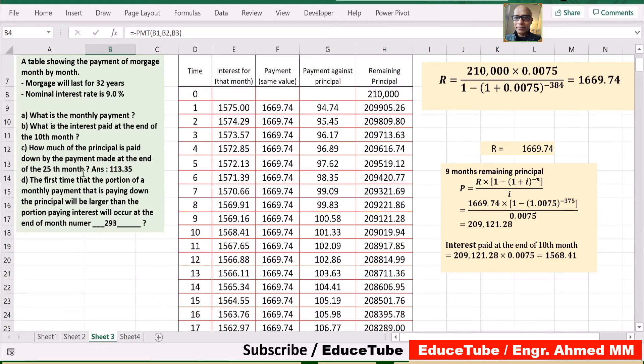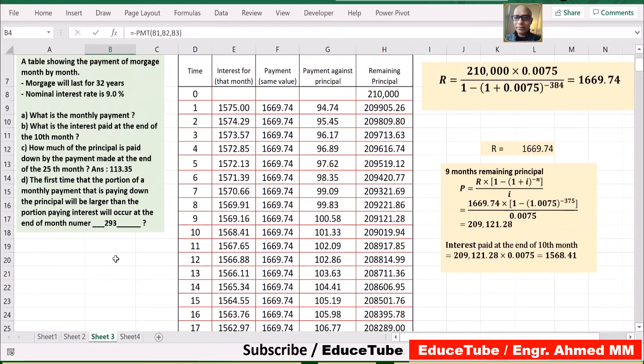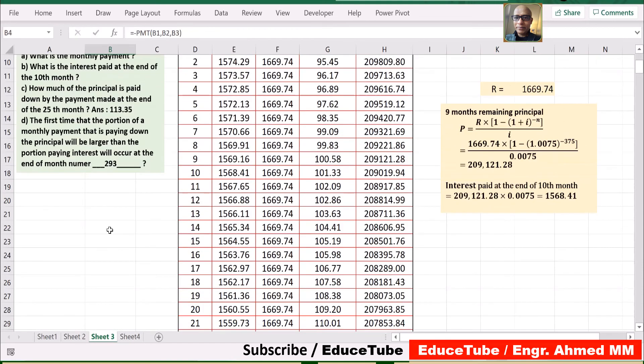How much of the principal is paid down by the payment made at the end of the 25th month? We must go to the table, 25th month. See the 25th month—I put it in yellow color. So how much? $113.35. This is what the question asks.